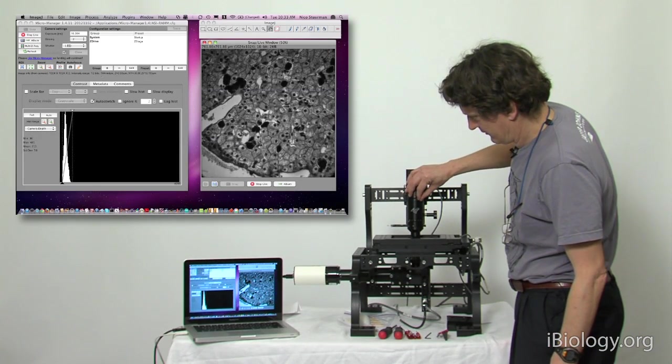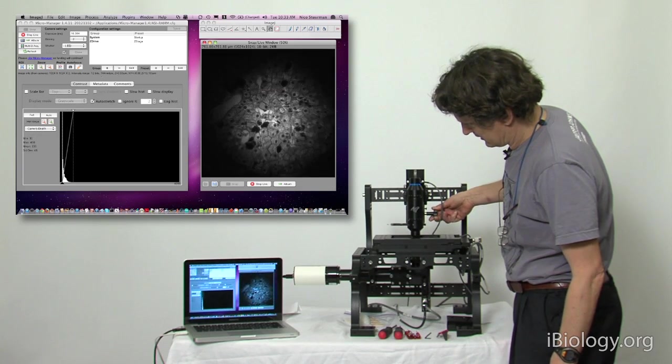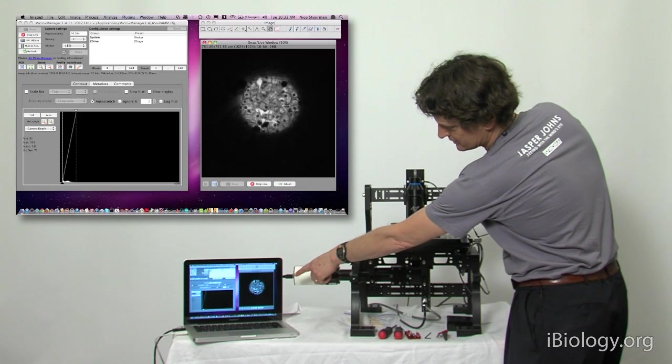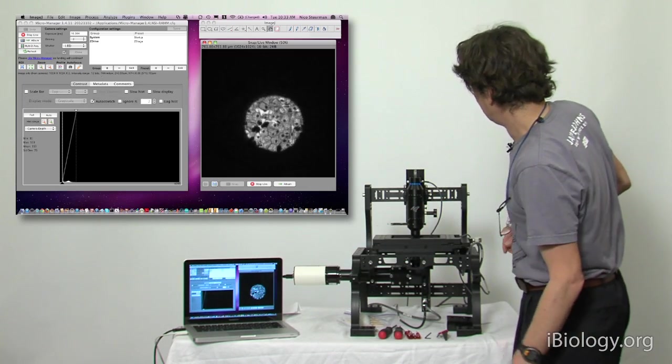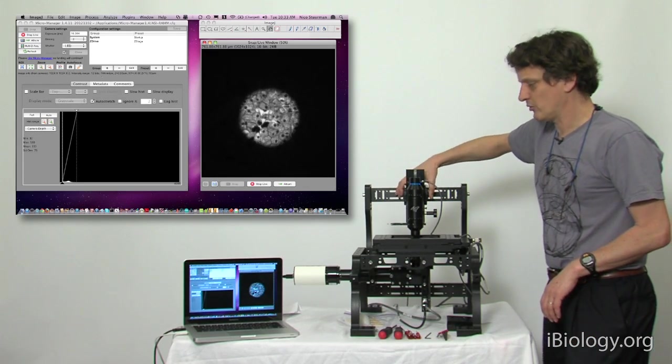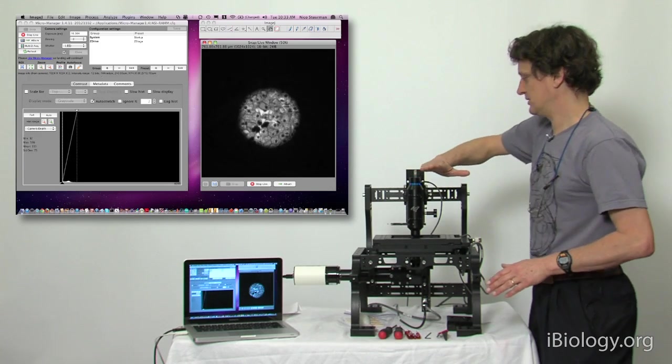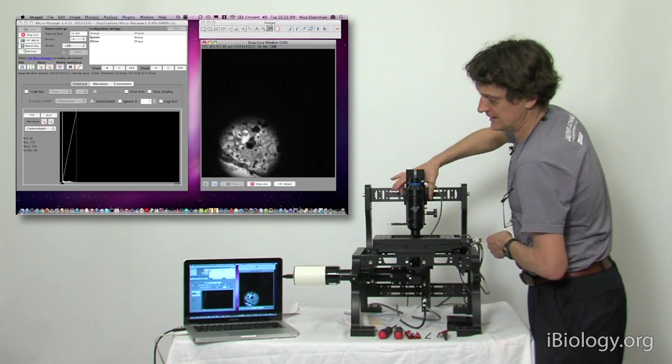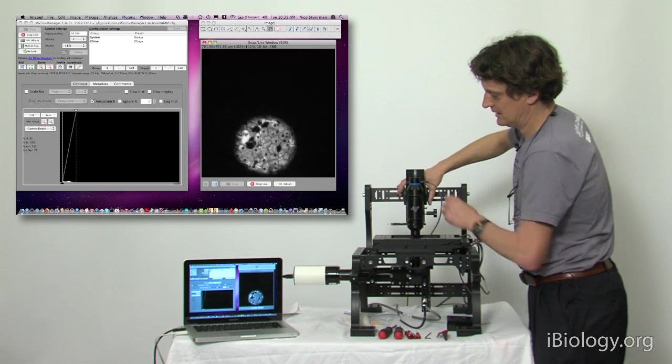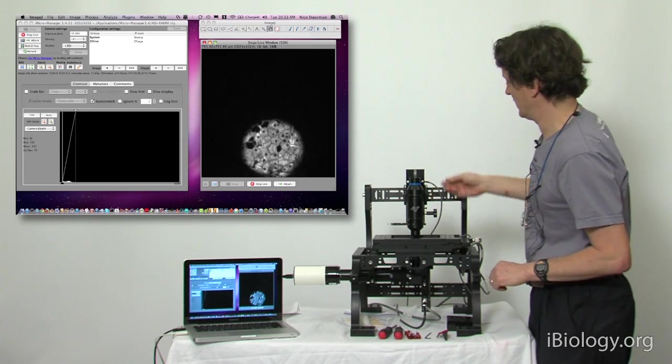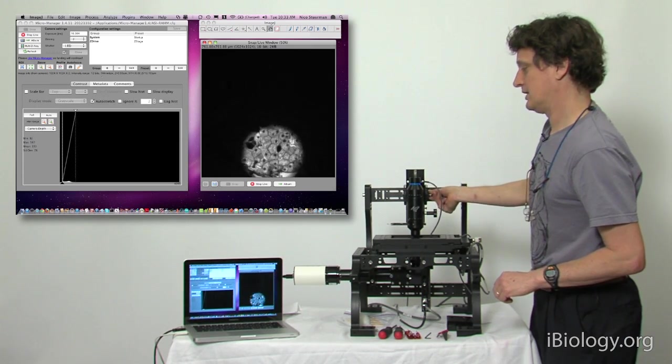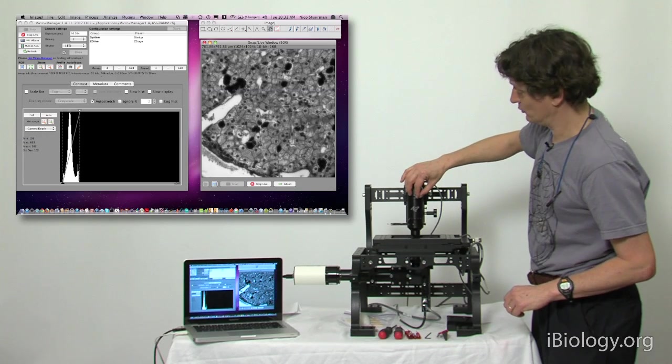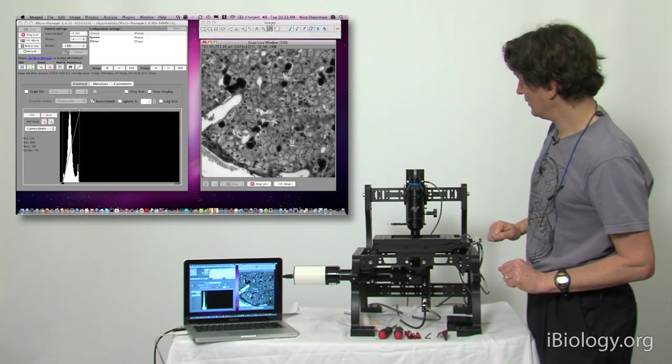So we'll close down the field diaphragm, find the point where it's focused onto the sample, which is right here. There's some controls here with which we can move this condenser in this direction and this direction. We can center that and then open it slightly so it covers the full field of view. And so here we would have set up Köhler illumination.